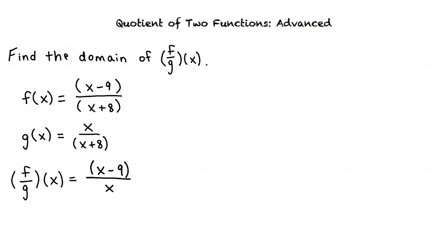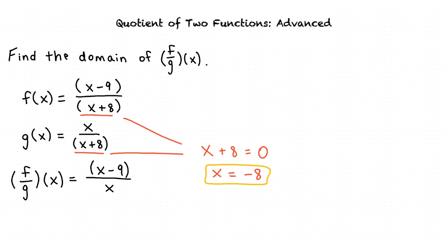Looking at f of x and g of x, we can see that the denominator for both is x plus 8. We can find the value that makes the denominator 0 by setting it equal to 0. Subtracting 8 from both sides, we have found that x equals negative 8 is not in the domain. Our final step now is to find the values that are not in the domain of f divided by g. Again, we set our denominator equal to 0, and we have found that x equals 0 is not in the domain.